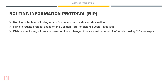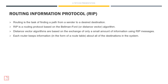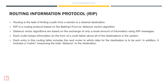Distance vector algorithms are based on the exchange of only a small amount of information using RIP messages. Each router keeps information, in the form of a route table, about all of the destinations in the system. Each entry in this routing table includes the next router to which data for the destination is to be sent. In addition, it includes a metric measuring the total distance to the destination.